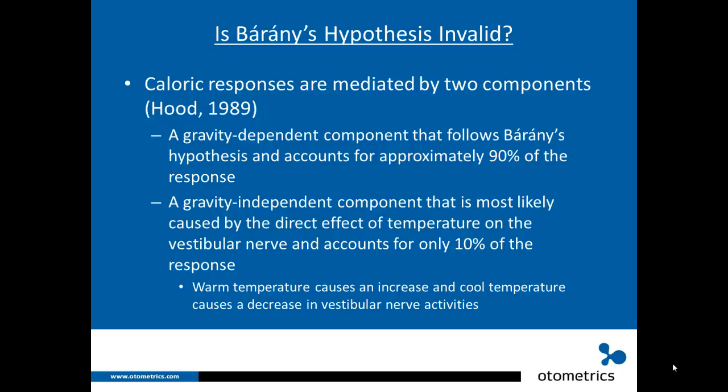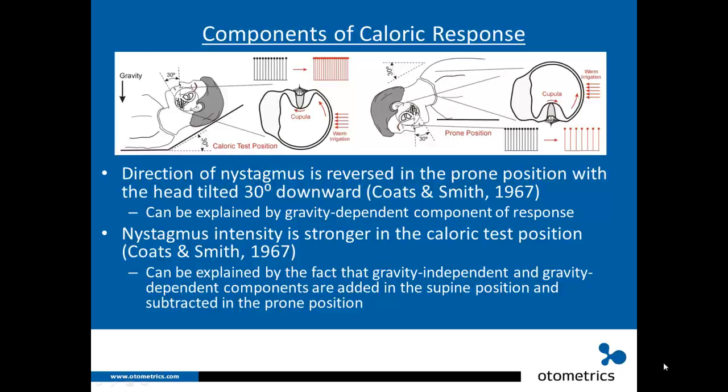For the gravity-independent component, warm temperatures cause an increase and cool temperatures cause a decrease in vestibular nerve activity regardless of head position. The evidence for two separate components of caloric stimulation comes from the observation that the direction of nystagmus is reversed in the prone position with the head tilted 30 degrees downward — explainable by the gravity-dependent component. Furthermore, nystagmus intensity is stronger in the caloric test position compared to the prone position, because the gravity-independent and gravity-dependent components are added in the supine position and subtracted in the prone position.